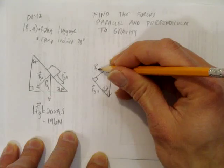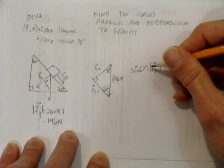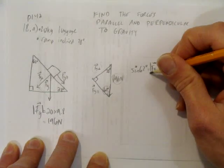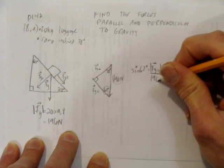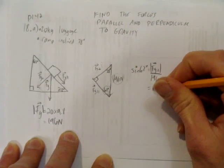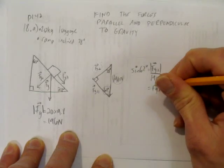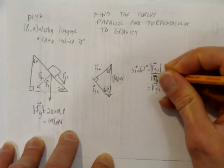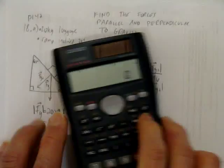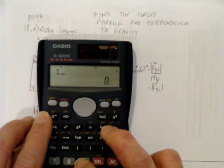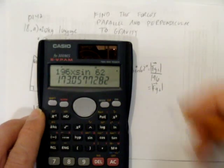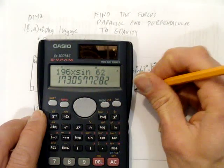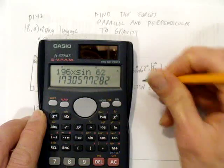Back to finding the force of gravity perpendicular. It's sine, which is opposite. Force of gravity perpendicular over hypotenuse, 196. So the force of gravity perpendicular is... I'm just going to multiply 196 times sine of 62. Make sure your calculator is in degrees, and you get approximately 173 newtons.